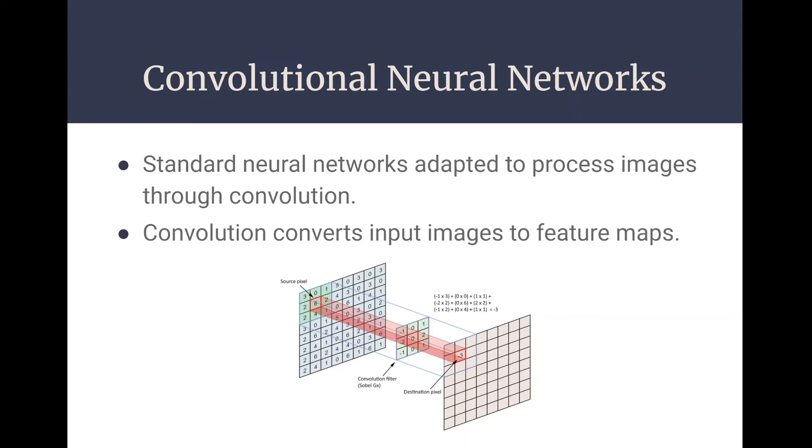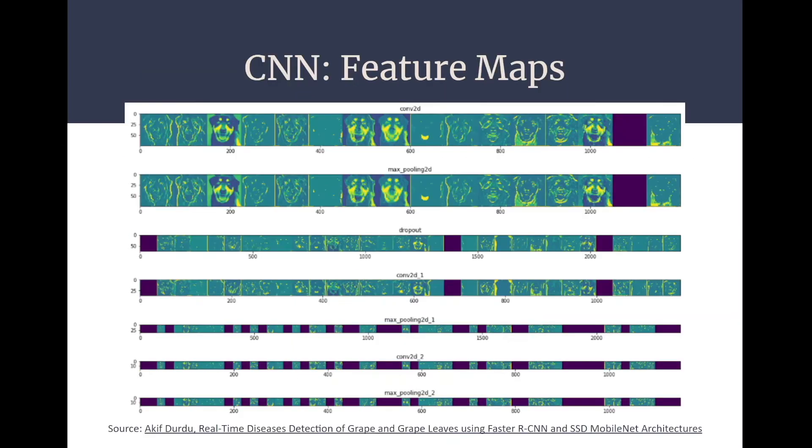This multiplication produces a feature which is going to populate this feature map here. So it takes this small section, multiplies by a kernel, and then populates our feature map. This process of convolution is repeated many times for each image using different convolution filters to produce many feature maps.